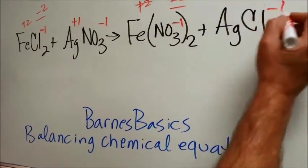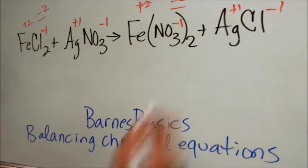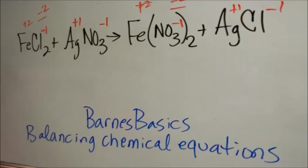Chlorine is minus 1. Silver is plus 1. This is balanced. Everything is good to go, and we are ready to balance the overall equation.